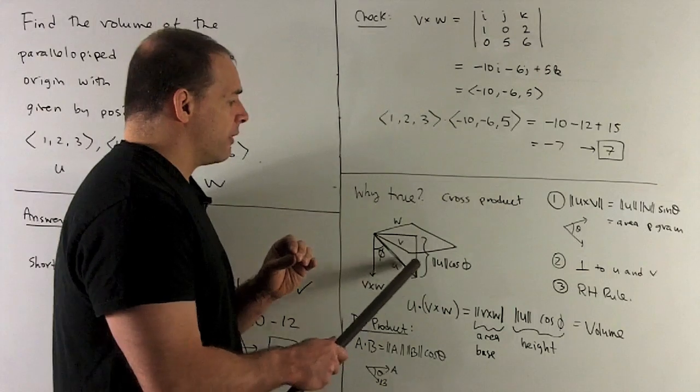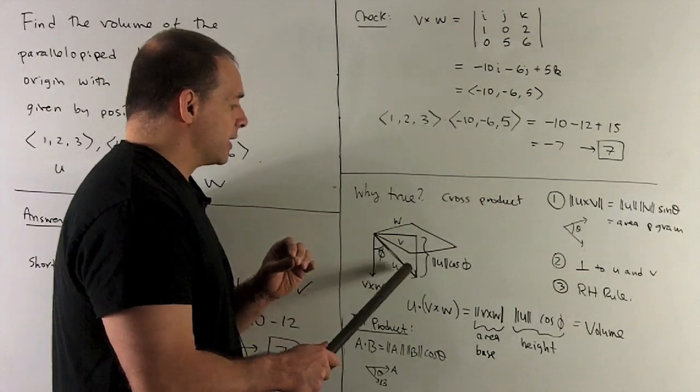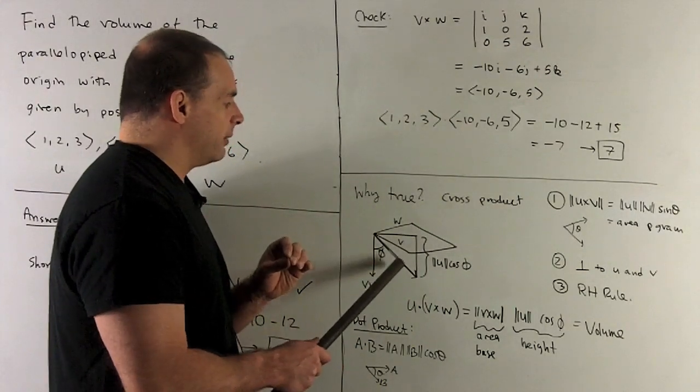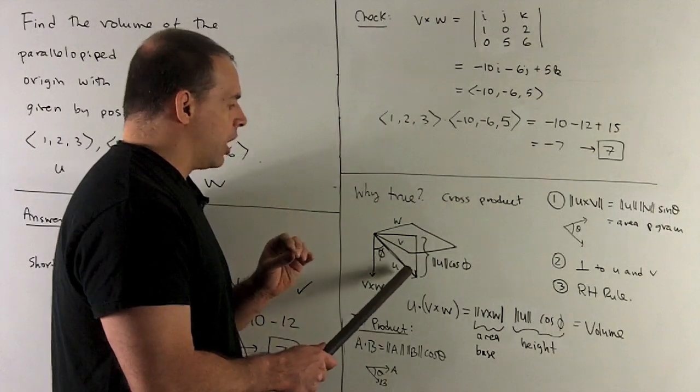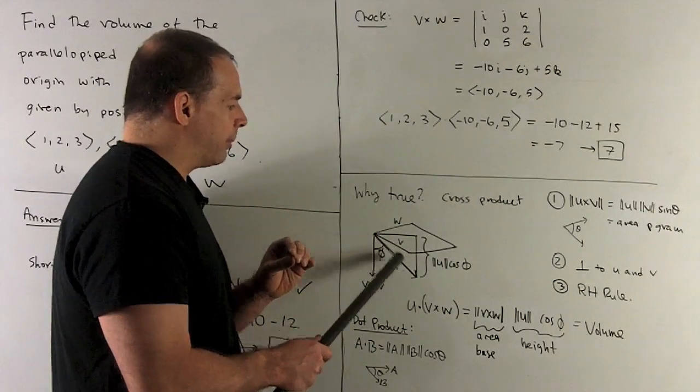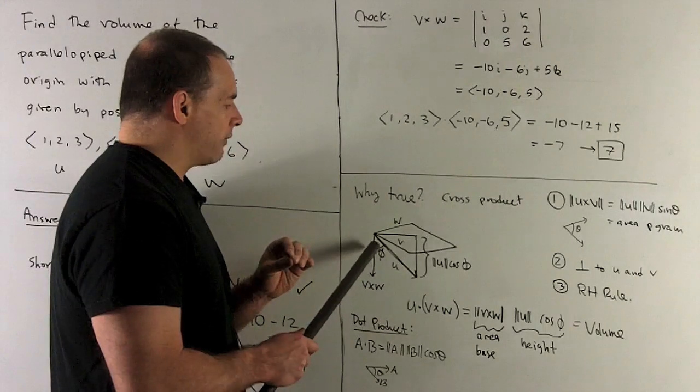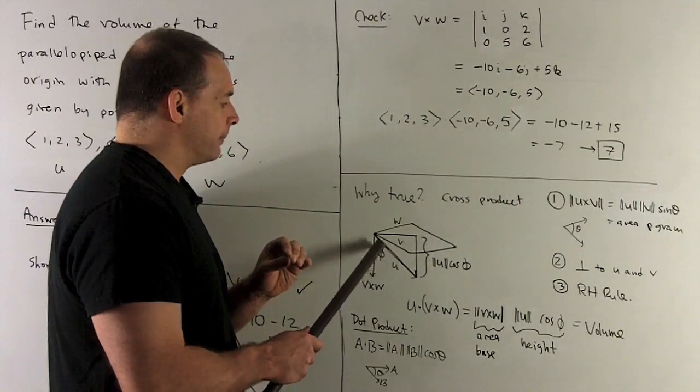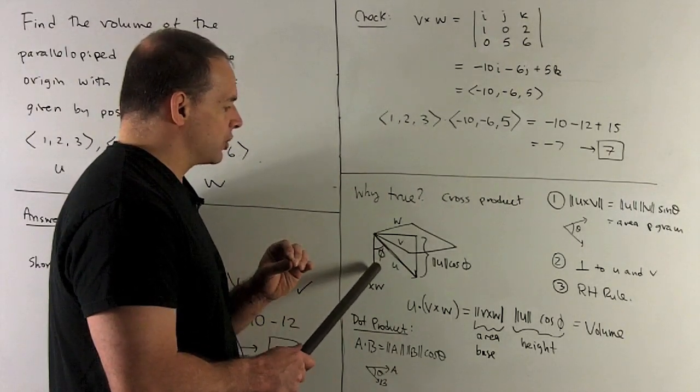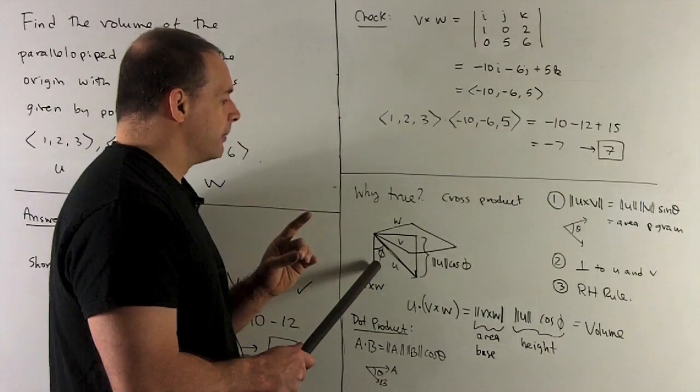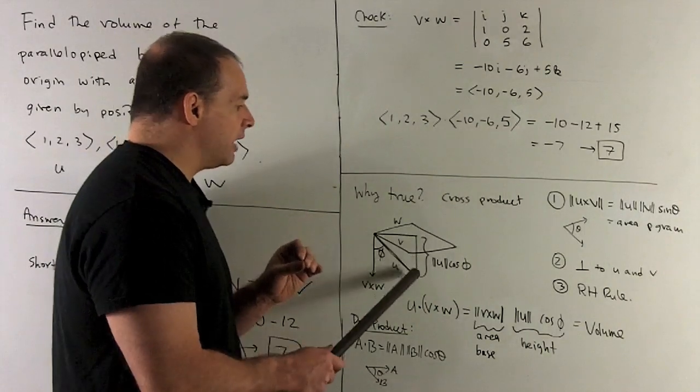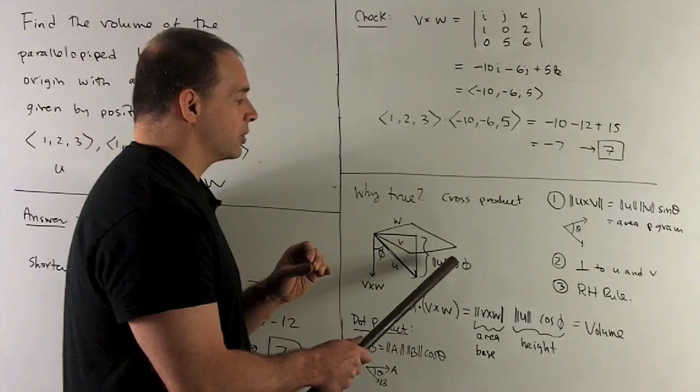Now, if I want the height of our parallelepiped, that's going to be, you'll see, given by, okay, we'll take a look. If I draw on the right triangle, okay, hypotenuse U, okay, we're going to have our angle is given by phi. So the adjacent here is just going to be cosine phi. So this height is going to be length of U times cosine of phi.